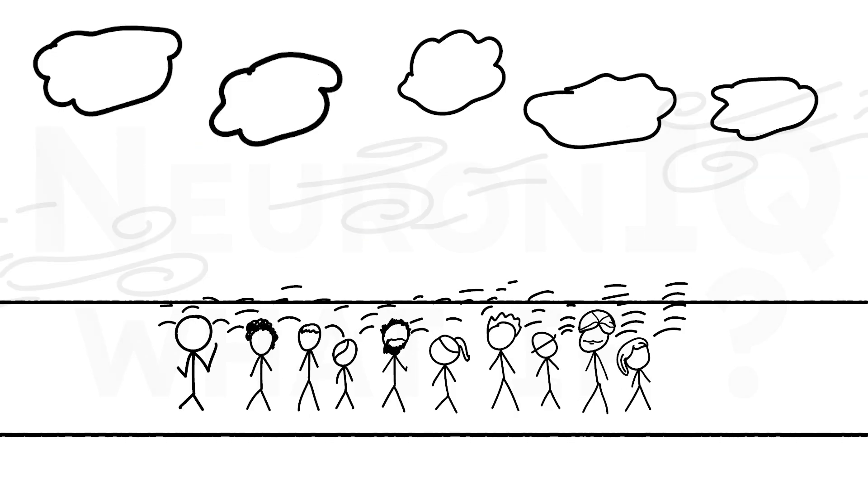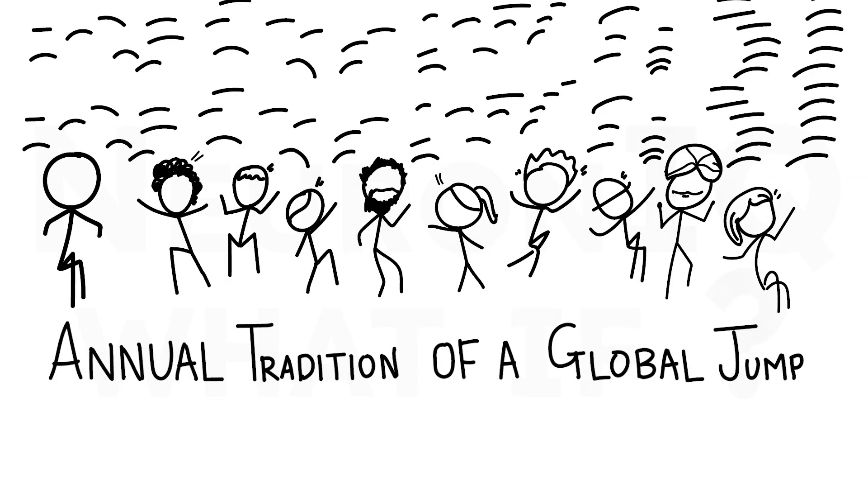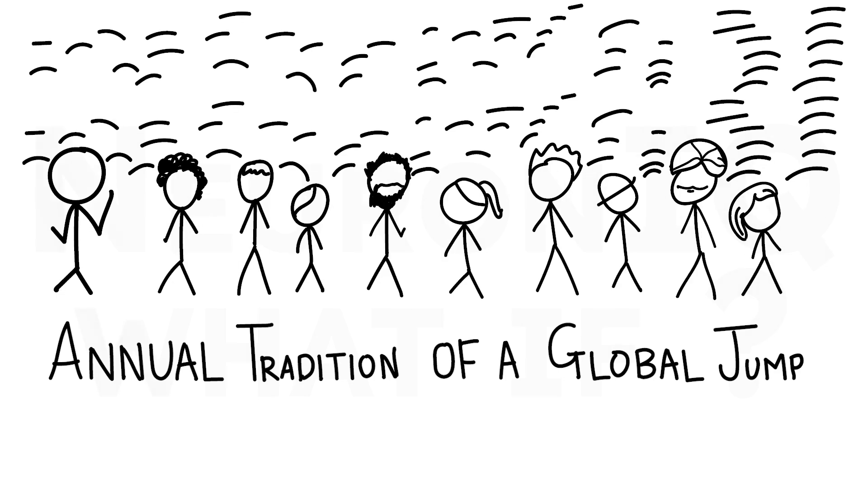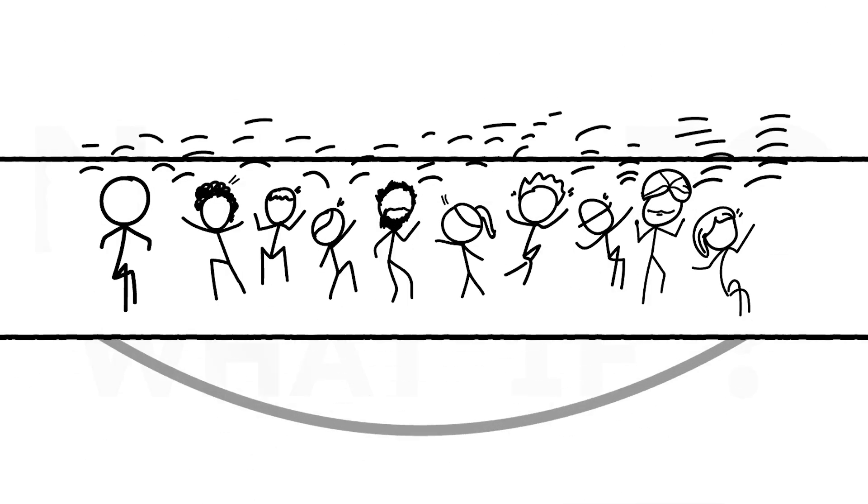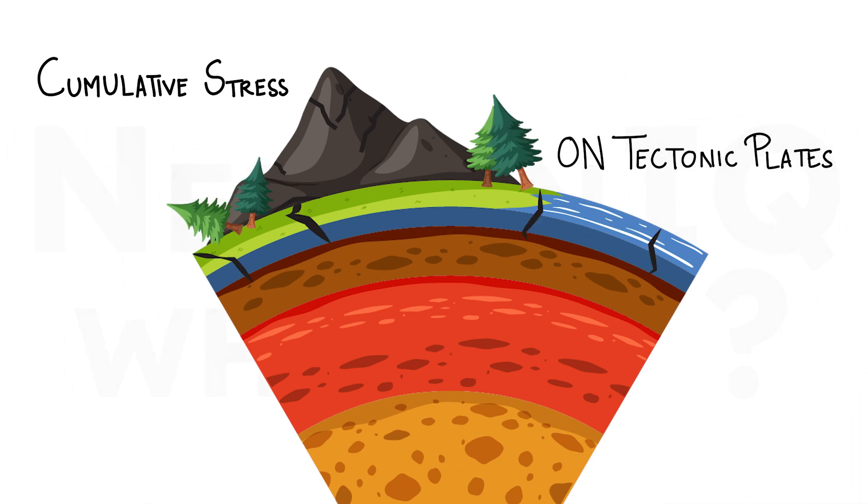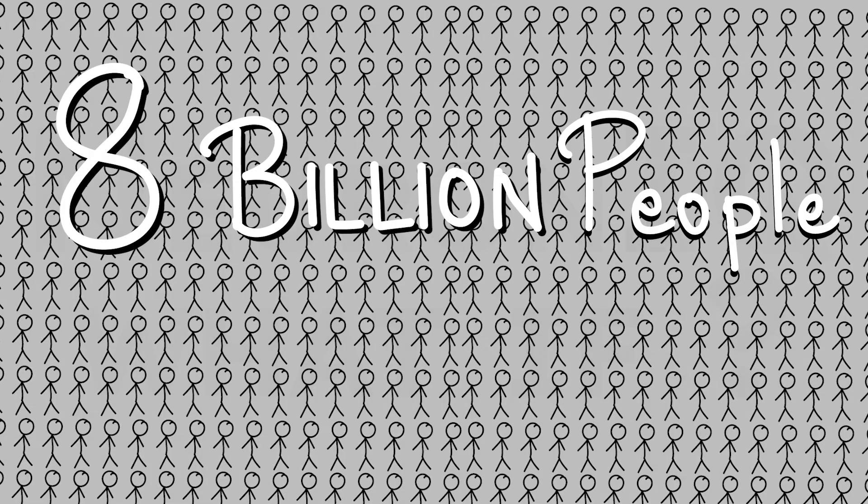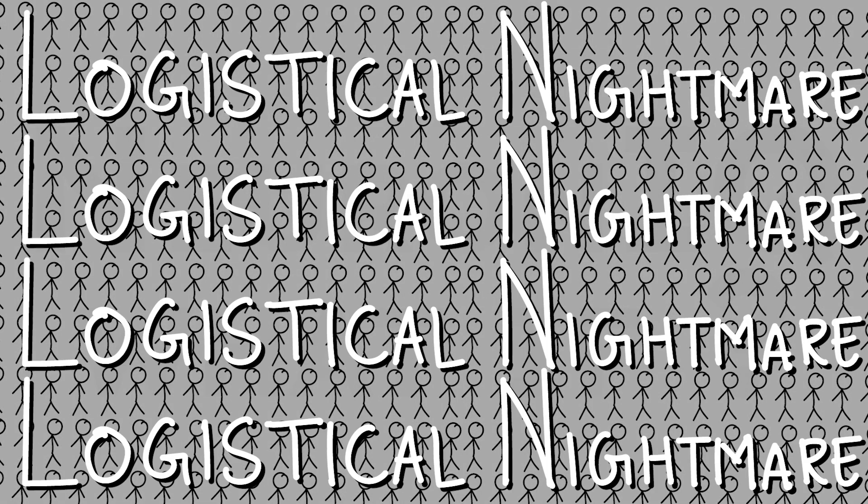If this global jump became a regular event, say an annual tradition, it could start to have long-term consequences. Repeated pressure waves might disrupt ecosystems, and the cumulative vibrations could strain tectonic plates in already vulnerable areas. And let's not forget the chaos of organizing 8 billion people into one place. Talk about a logistical nightmare.